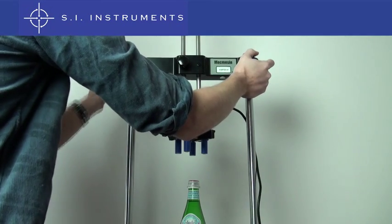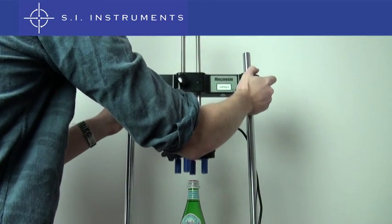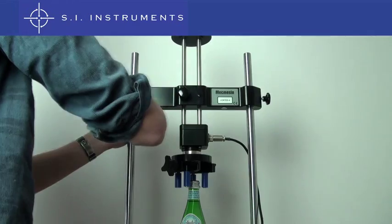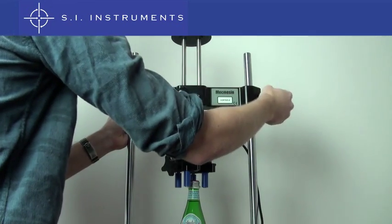The cross head can be adjusted for the different bottle heights. The centre bar is used for lowering the cap holder onto the cap of the bottle.